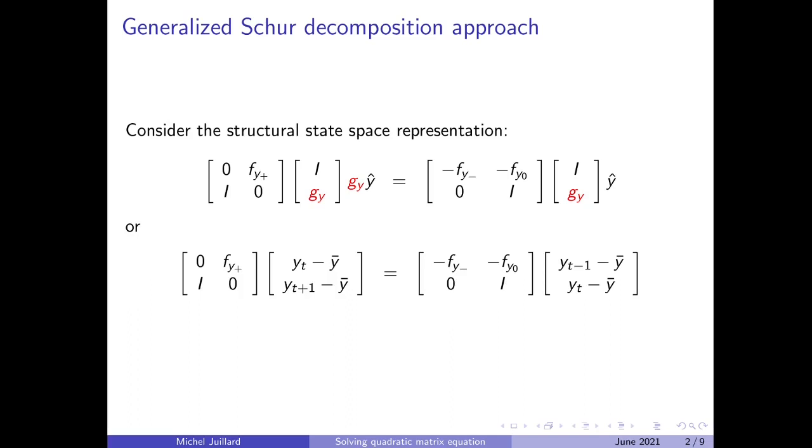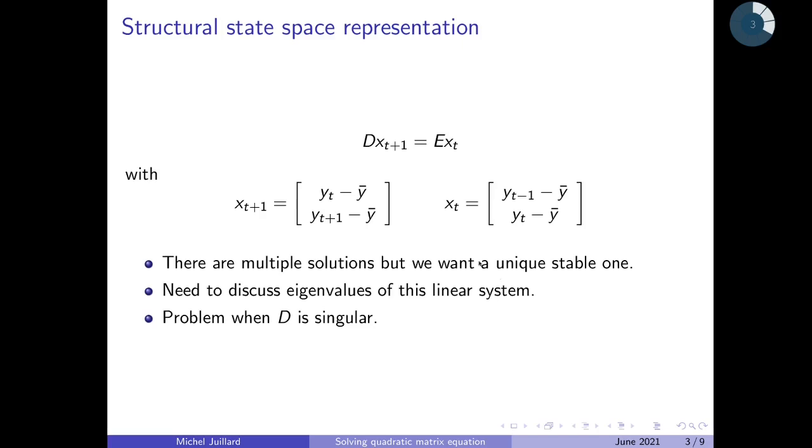Now we can write this system in a more synthetic manner, where the left-hand side will be D xt+1, where xt+1 is yt minus y bar and yt+1 minus y bar, while we'll have the E matrix and xt, which is yt-1 and yt minus y bar, yt minus y bar.